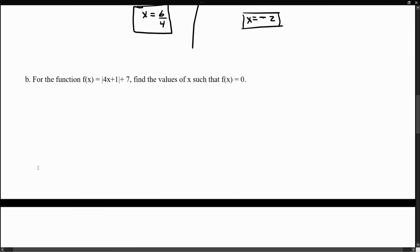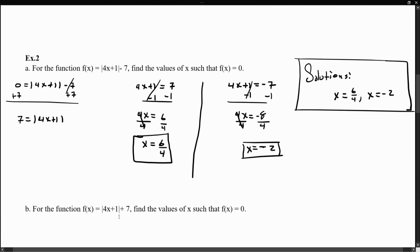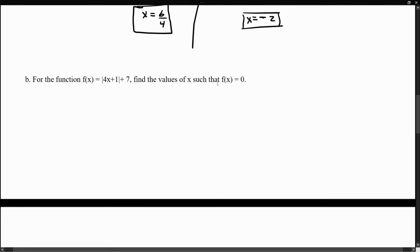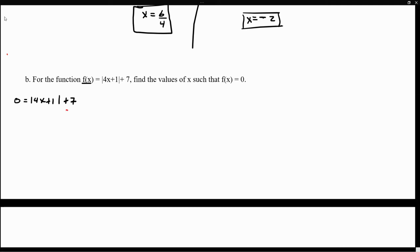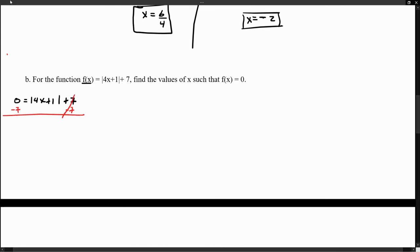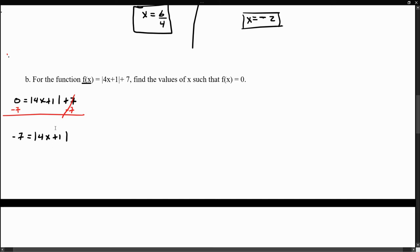Now for example b, we have the same function but with a positive 7 instead of negative 7. We set f(x) equal to 0 and add 7 to both sides after setting up the equation. This gives us the absolute value of 4x plus 1 equals negative 7. We stop right here — because an absolute value expression equal to a negative value is not possible. Therefore, there is no solution.